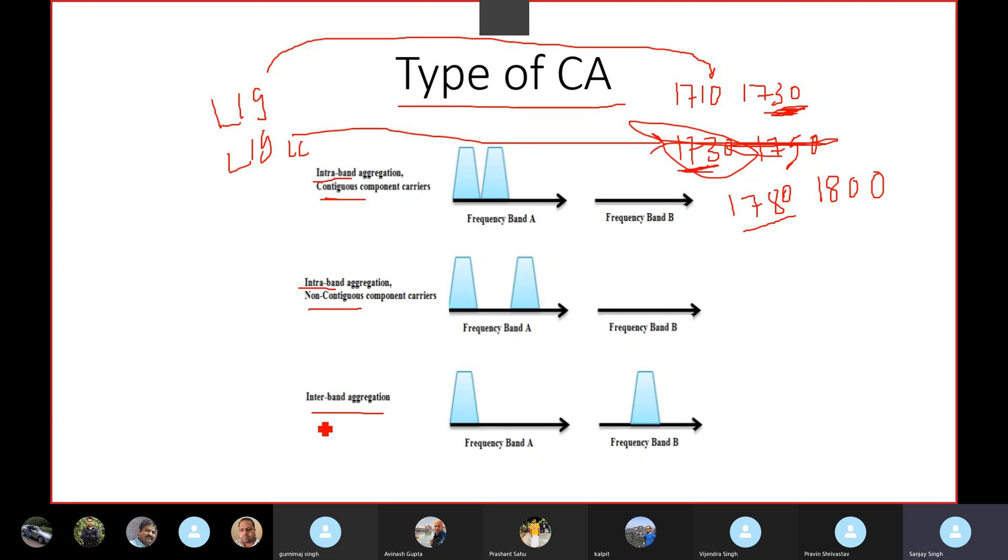And next one is the inter-band carrier aggregation. So inter-band carrier aggregation means, let's say we have one band that is L19 100 and another band is L21 100. That comes under inter-band carrier aggregation. Also, we do the carrier aggregation between LTE and 5G. So that also belongs to inter-band carrier aggregation.